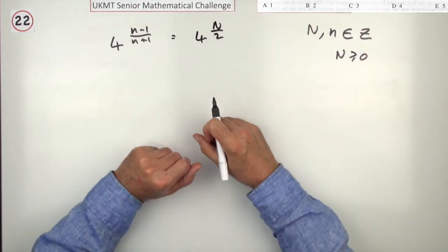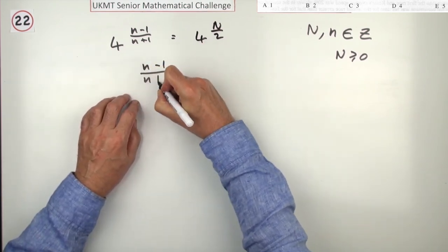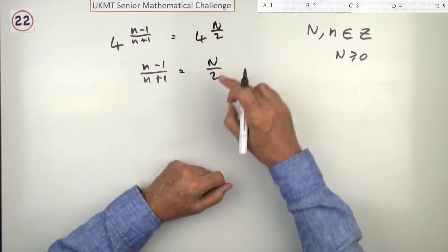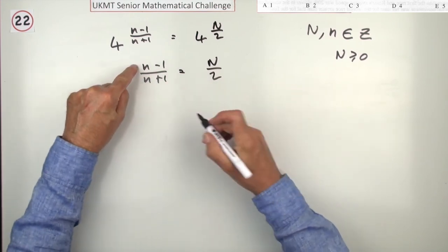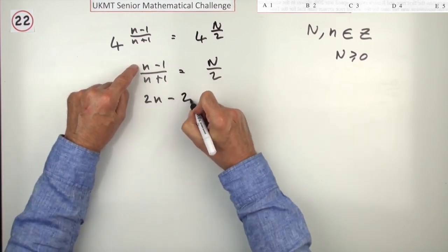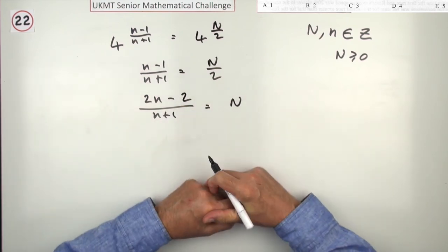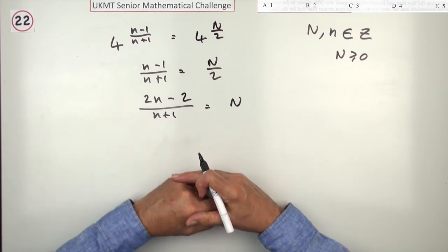But you probably wouldn't have done that if you'd written this down, first of all, because there's an obvious equation. n minus 1 over n plus 1 has to be some number upon 2, where this has to be greater than or equal to 0. Well, take that 2 across and you've got this. 2n minus 2 over n plus 1 has to equal n, where n's an integer greater than or equal to 0. In other words, that's got to divide exactly into the top.